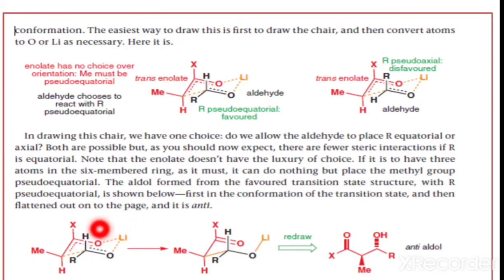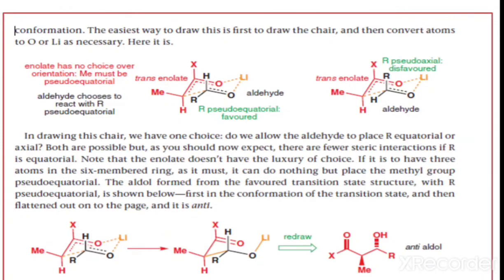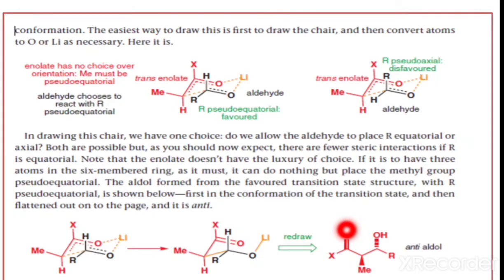Flattening out the favored transition state on the page: the methyl group is equatorial and the R group is also equatorial. Redrawing the structure, we get X-C double bond O with methyl above the plane and the OH group below the plane — giving the anti aldol. This confirms that from the trans enolate we get the anti aldol.